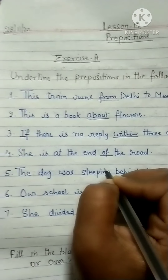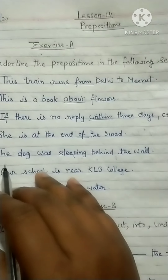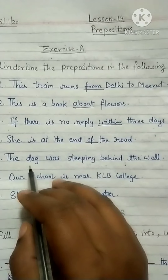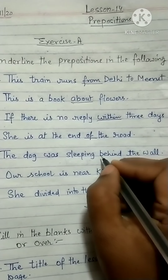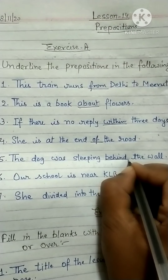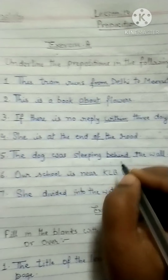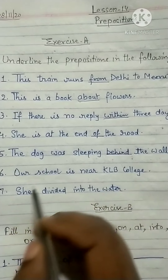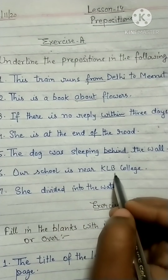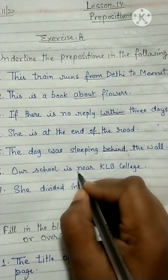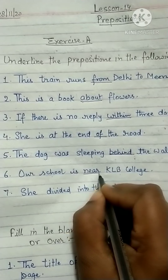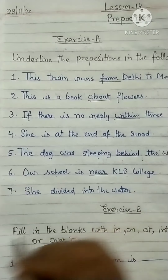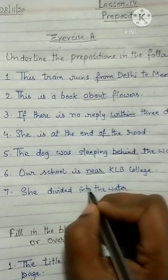'The dog was sleeping behind the wall' — so where was the dog sleeping? Behind the wall, so 'behind' is the preposition. 'Our school is near KLB College' — near to which college? KLB College, so 'near' is used as a preposition. 'She dived into the water' — 'into' is the preposition.